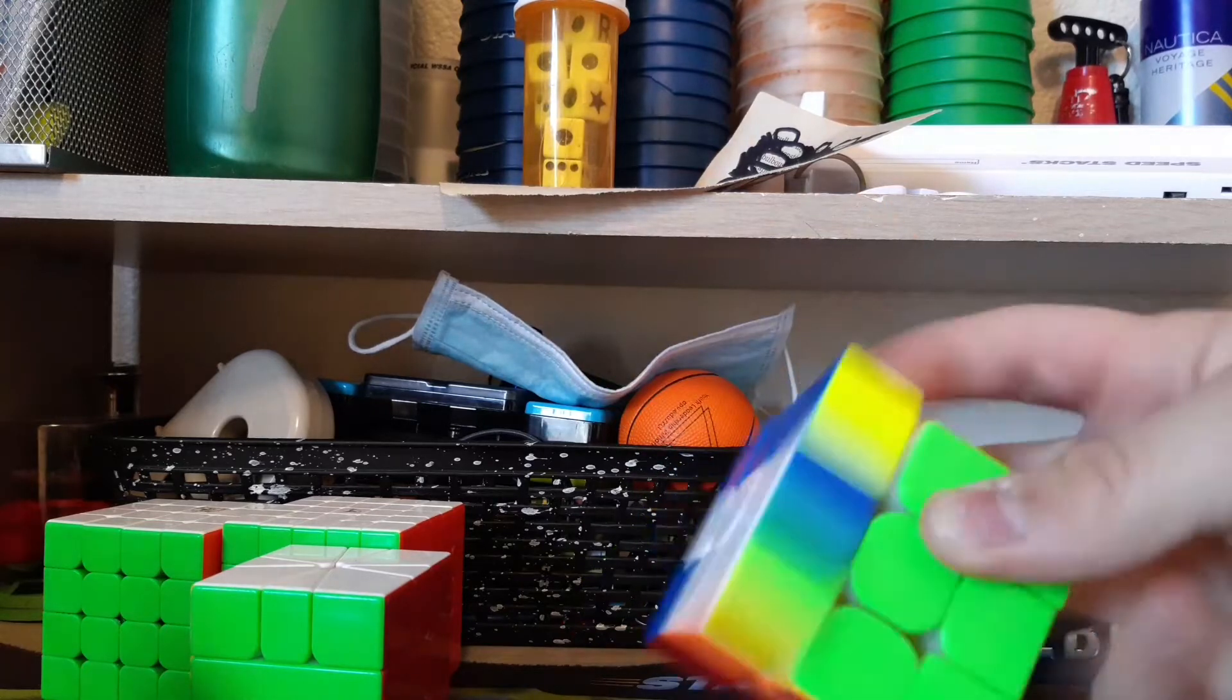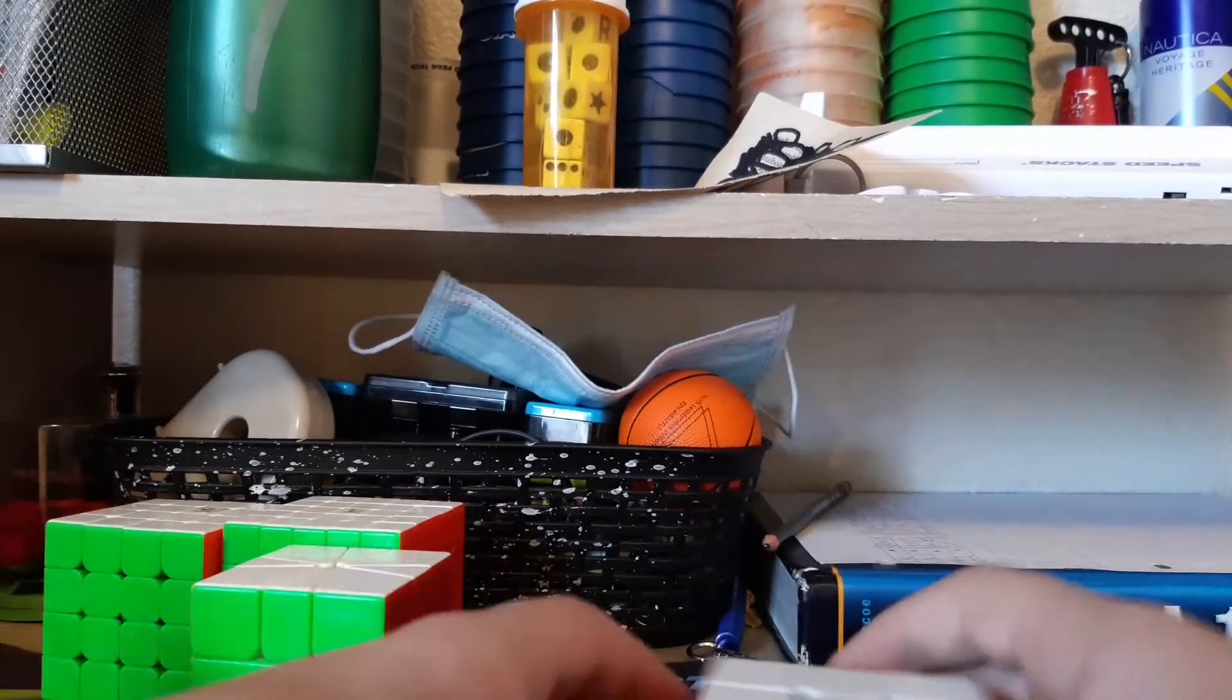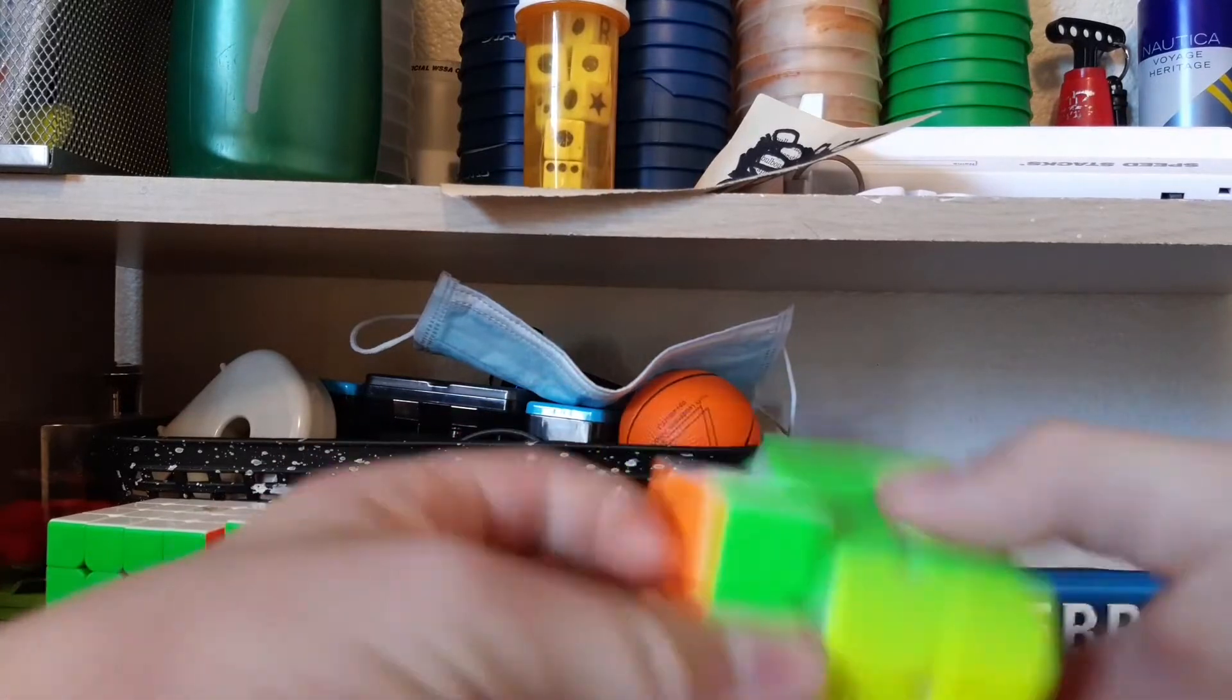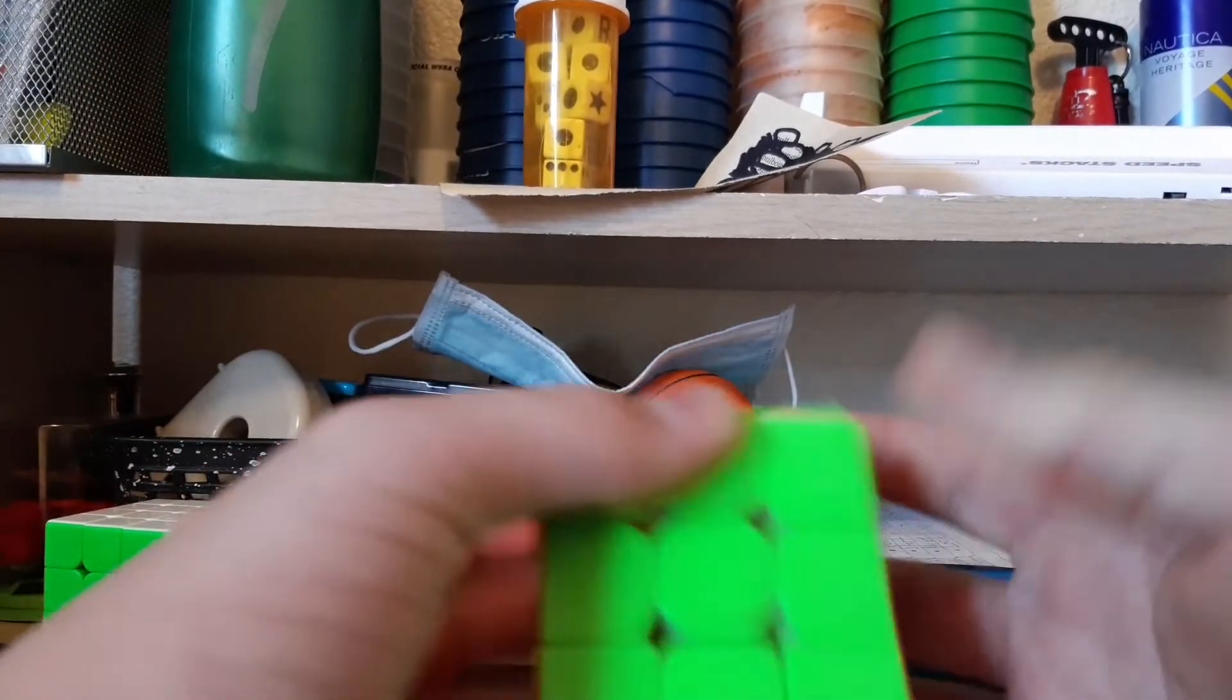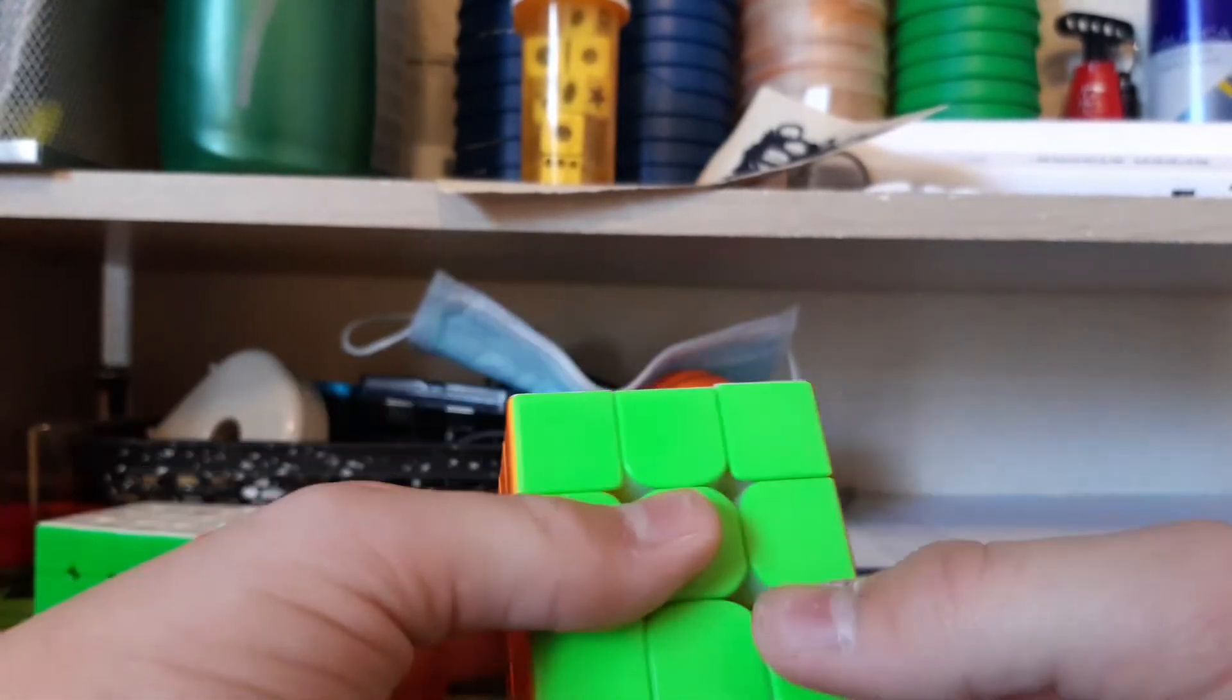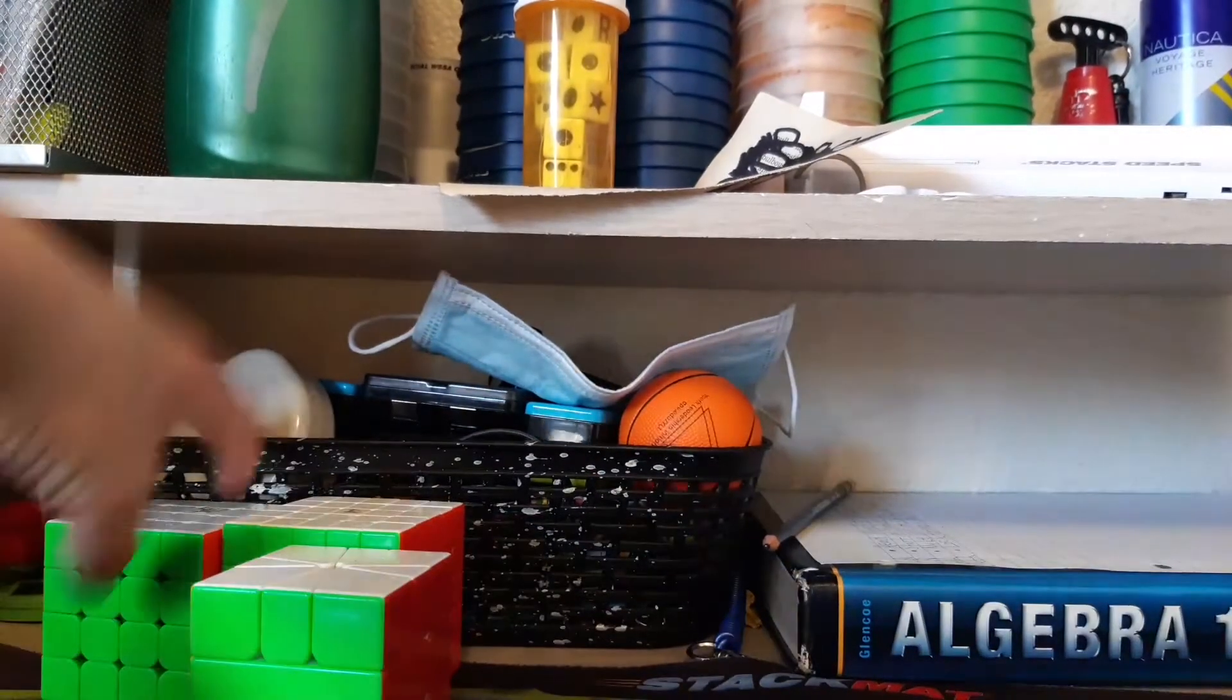For one-handed, I average about low 20, like 21-ish, like 20 to 21 depending. Sub-20 isn't really that hard for me, but I'm not good at getting a lot of sub-20 averages because I'm really inconsistent on OH. I use the Valk Elite for both 3 and OH.